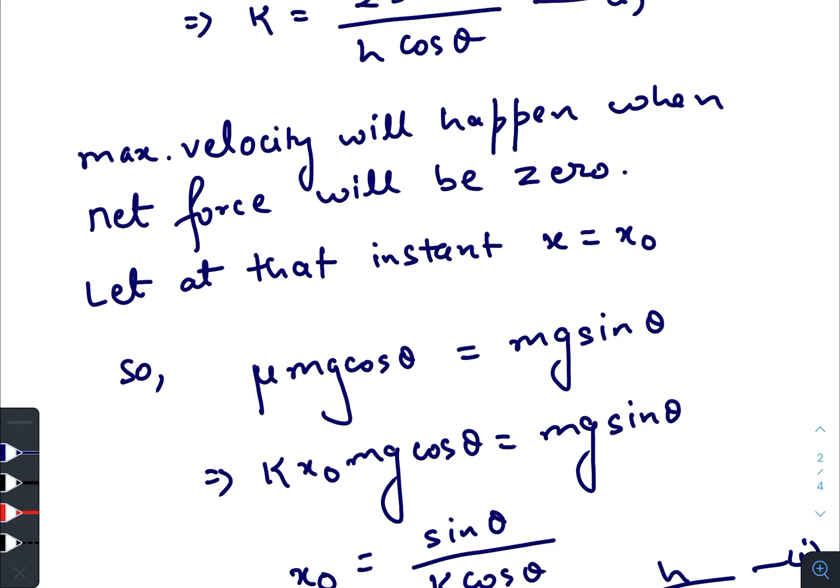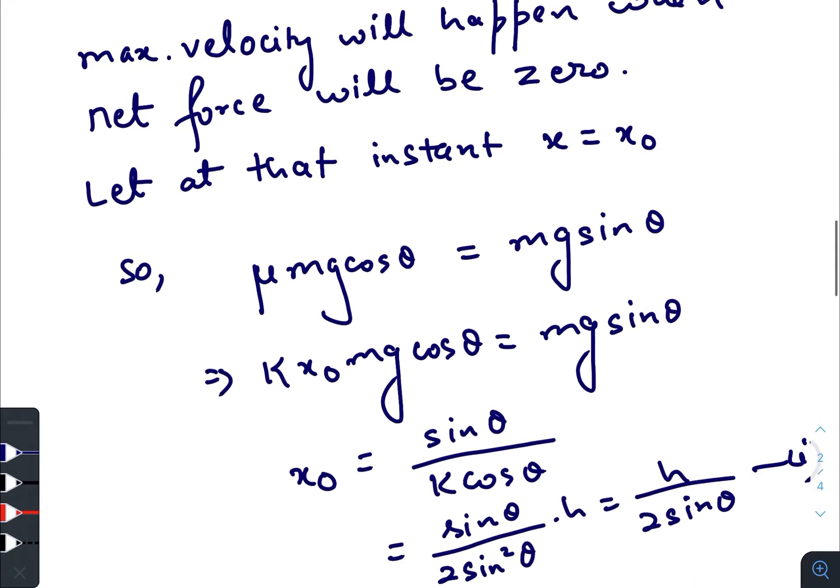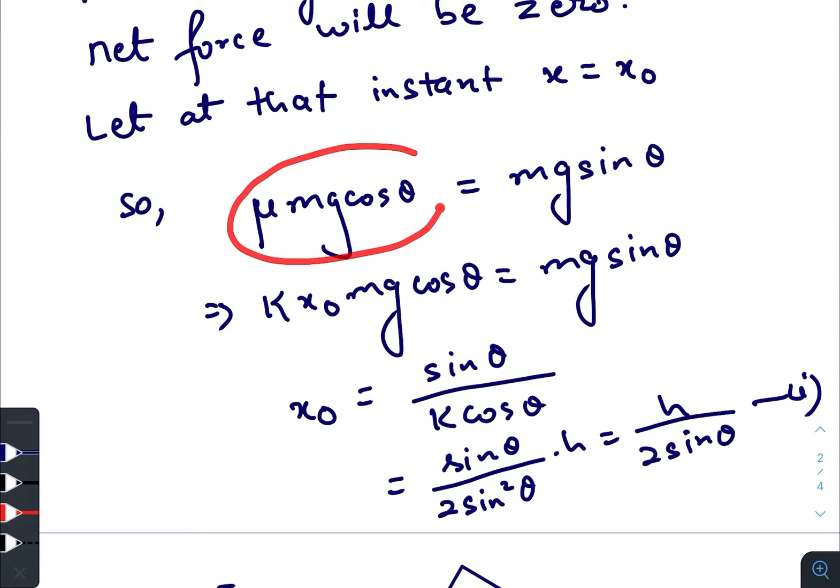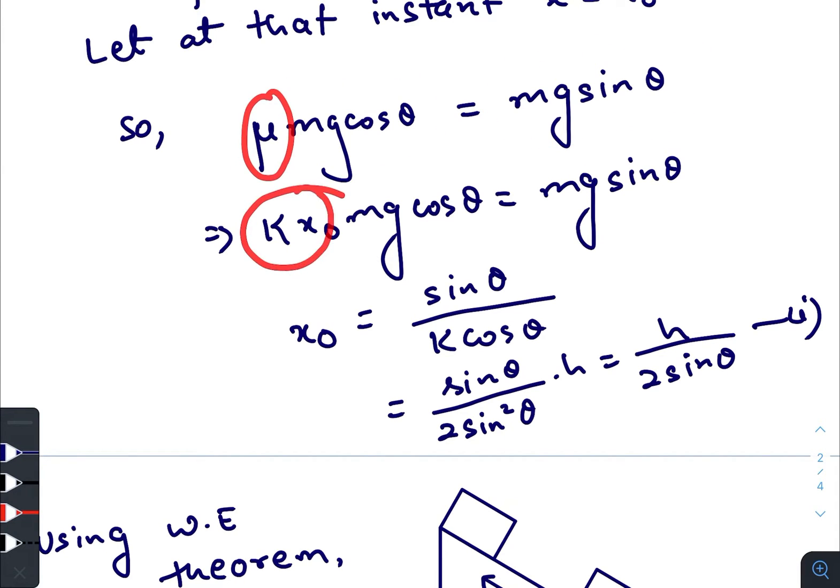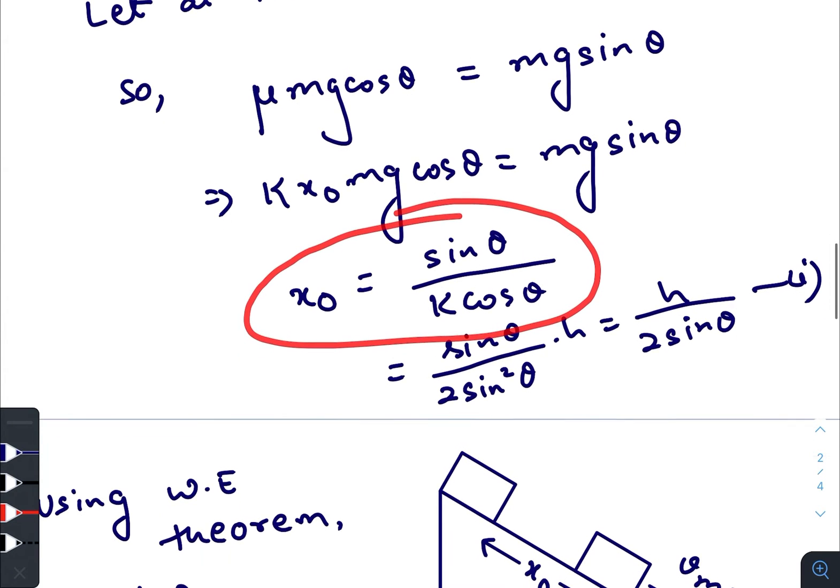Let that thing happen when x equals x₀. So at that time μ mg cos theta will be equal to mg sin theta. We have μ equals to kx₀, here μ equals to kx₀. So we get x₀ equals to sin theta by k cos theta.